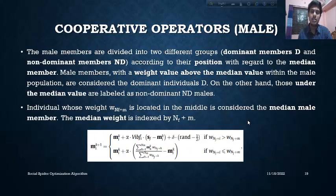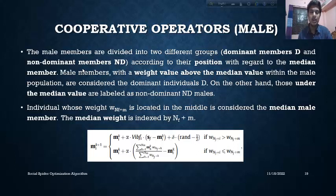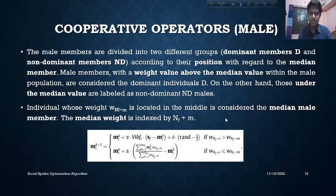Now consider the male point of view. We have two types of male: dominant and non-dominant members. To classify them, we use the median weight value. The weight value above the median is considered the dominant male, and below the median is considered the non-dominant male. The median weight is indexed by NF plus M, i.e., number of females plus M.